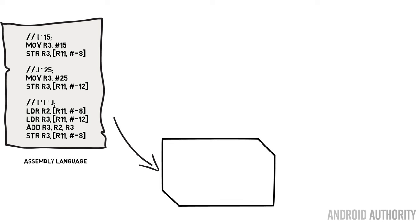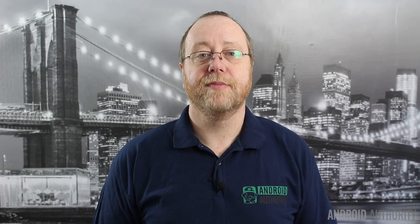Here's an example: as you can see, it tells us we want to move one into register zero. Now, assembly language is written in a text file and has to be converted into machine code by a thing called an assembler. An assembler takes this very low-level code and turns it into machine code which the CPU knows how to execute.